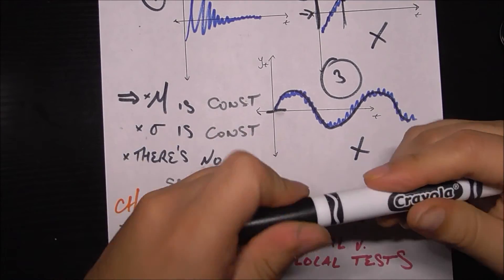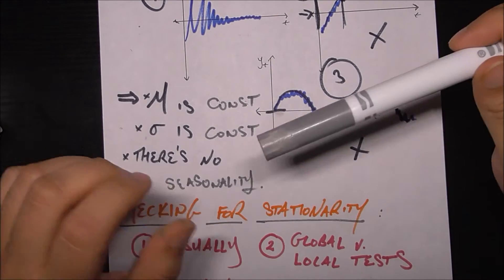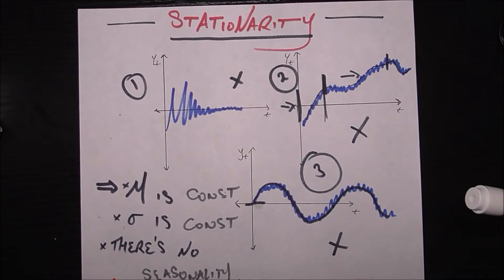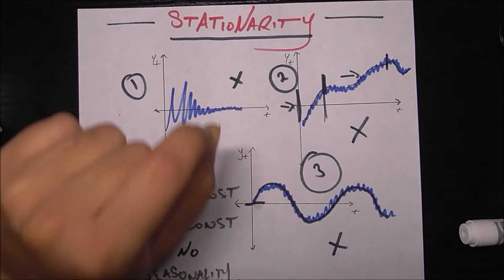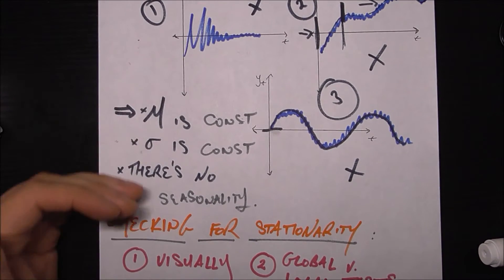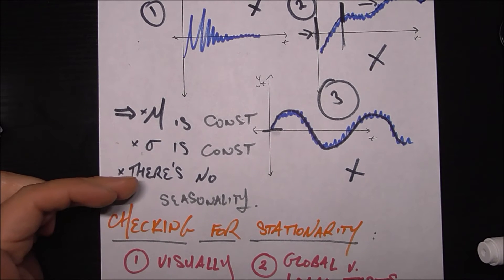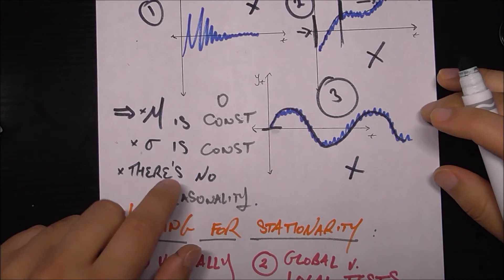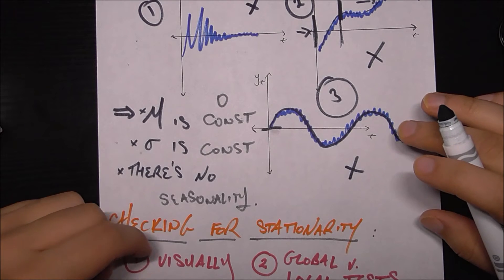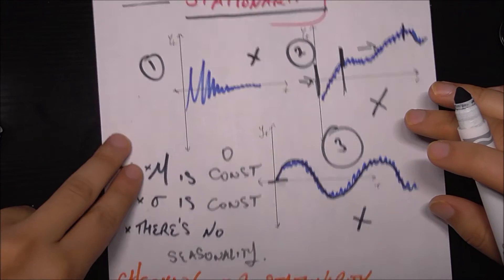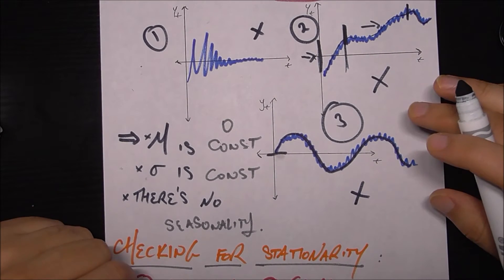Before we go into checking for stationarity, I do want to make a quick brief discussion into how is stationarity different from white noise. We had a video on white noise and I think a lot of students get them mixed up. If a time series is white noise, we also know it's stationary. Because the white noise conditions are similar—the standard deviation needs to be constant, there needs to be no seasonality, and the mean needs to be zero which is a constant. But we can have stationarity around some other constant. So white noise is stationary, but just because something is stationary doesn't mean it's white noise because the mean may not be zero and some other conditions may be violated.